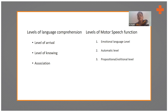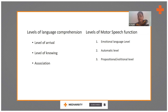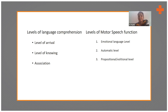The automatic level occurs in conversation — for example, when I approach a patient and say 'Hi, how are you?' and they reply 'I'm fine, thank you.' That is an automatic response they've been producing for a long time. The propositional or volitional level is what I'm doing right now — processing thoughts, conveying them, and varying speech intensity — which is the normal function we perform.